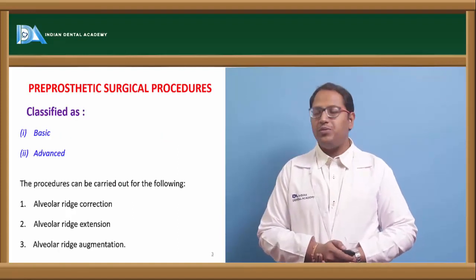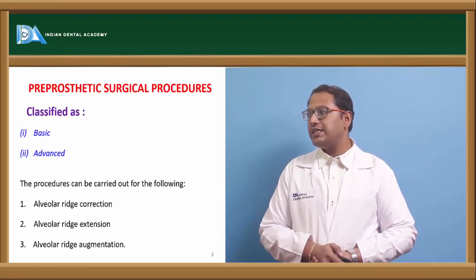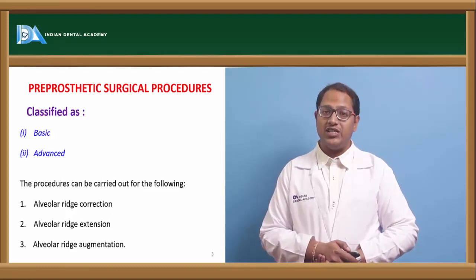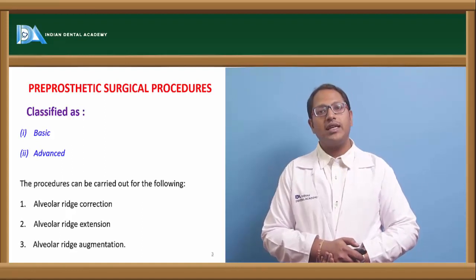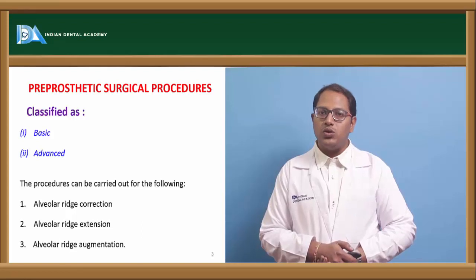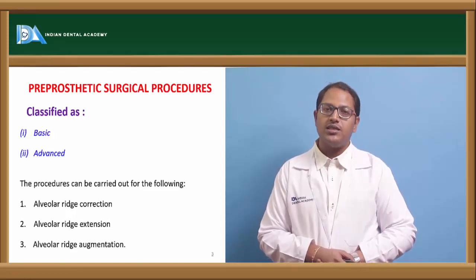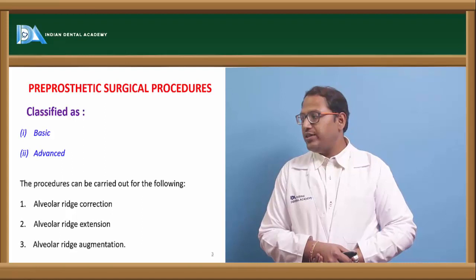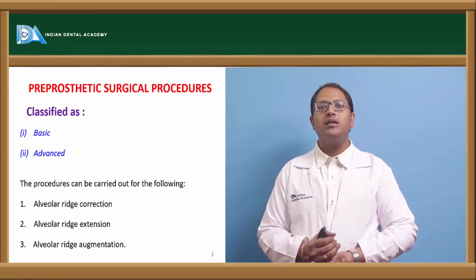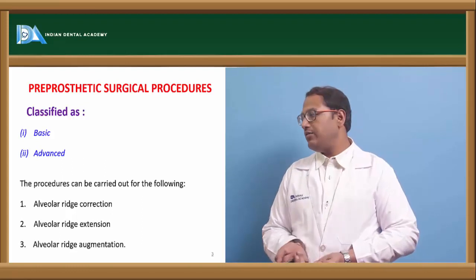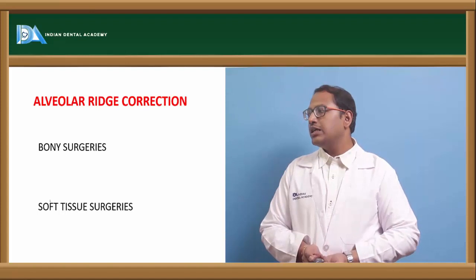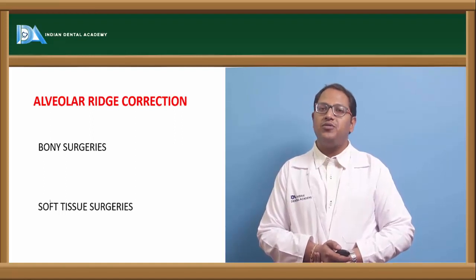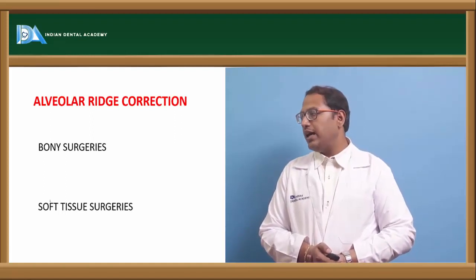How are we classifying pre-prosthetic surgeries? They are classified as basic surgeries and advanced surgeries. The procedures can be alveolar ridge correction, alveolar ridge extension, and alveolar ridge augmentation. Ridge corrections address any bony prominences. Augmentation means adding on to the ridge, and extension means increasing the ridge where it is deficient. Alveolar ridge corrections are further classified into bony surgeries and soft tissue surgeries.